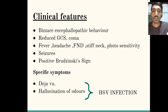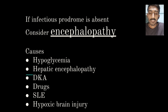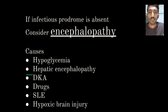One important thing to note: if the infectious prodrome is absent, we should look for encephalopathy instead. The causes of encephalopathy include hypoglycemia, hepatic encephalopathy, DKA, certain drugs, systemic lupus erythematosus, and hypoxia leading to brain injury. We should look for encephalopathy if the infectious prodrome is absent.